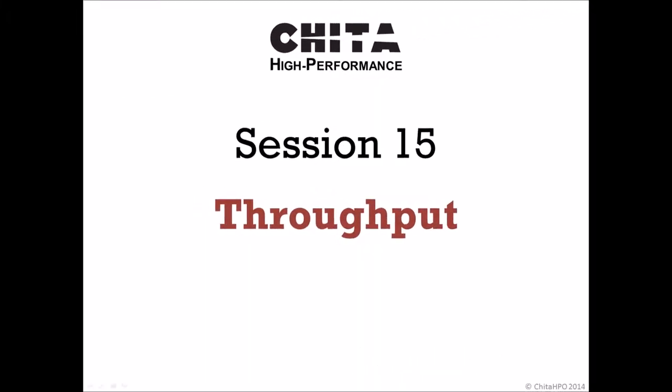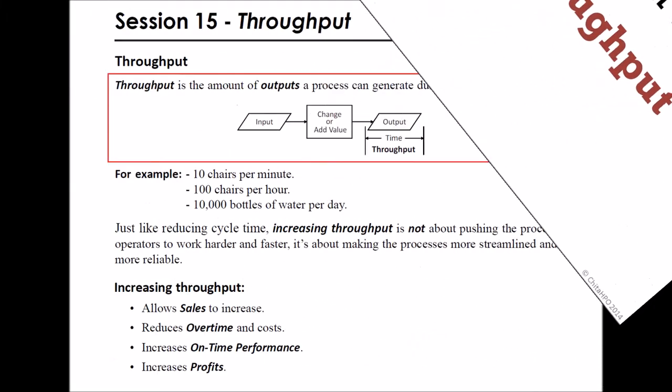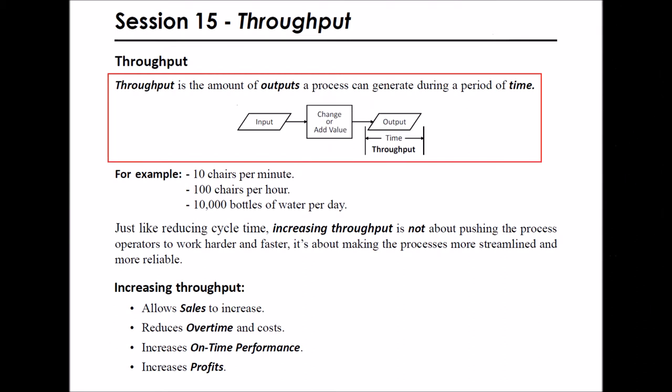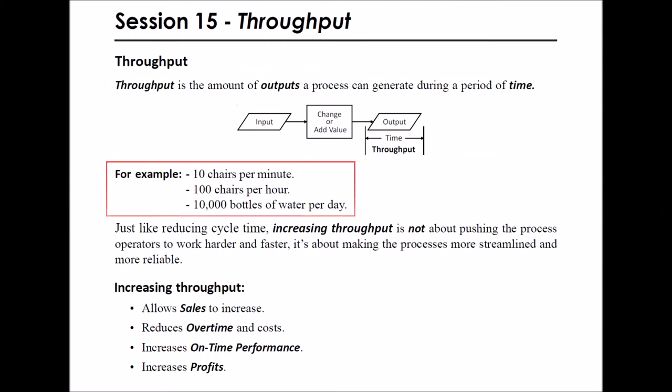Session 15: Throughput. Throughput is the amount of outputs a process can generate during a period of time. For example, 10 chairs per minute, 100 chairs per hour, or 10,000 bottles of water per day.